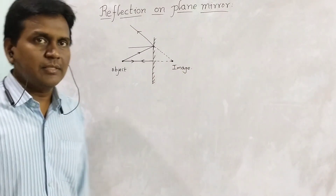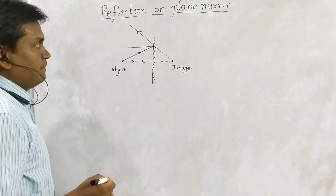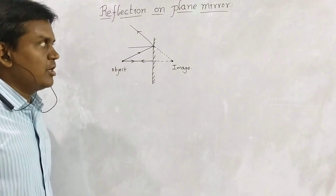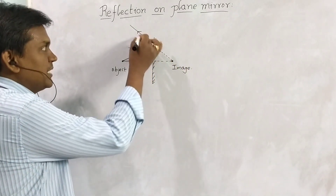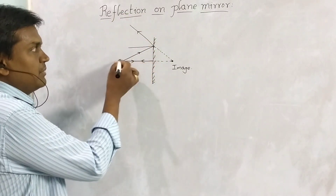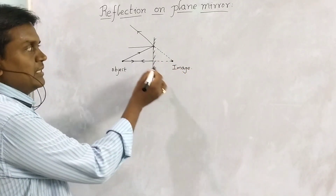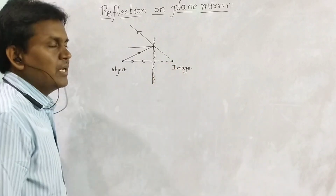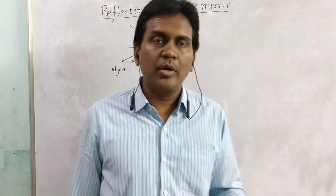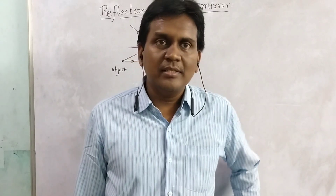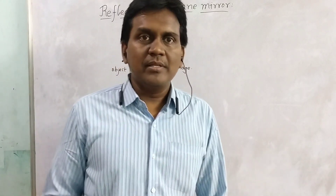The rays which are intersecting at a point, or which start at a point, are called the object. The reflected rays which intersect at a point form the image. Actually the rays are not meeting directly here — this ray goes like this and comes like this — so we extend them. By extending the two reflected rays, they meet at a point and the image is formed. If the reflected rays appear to meet at a point, then an image is formed there.